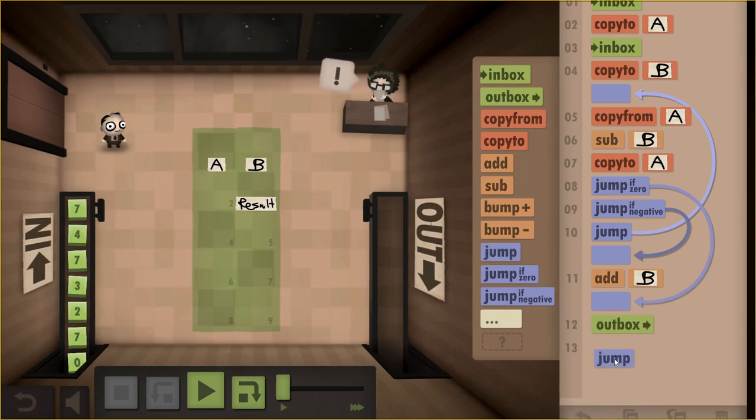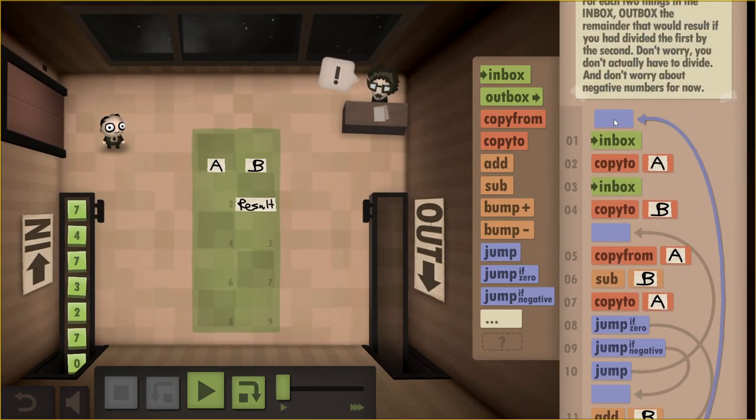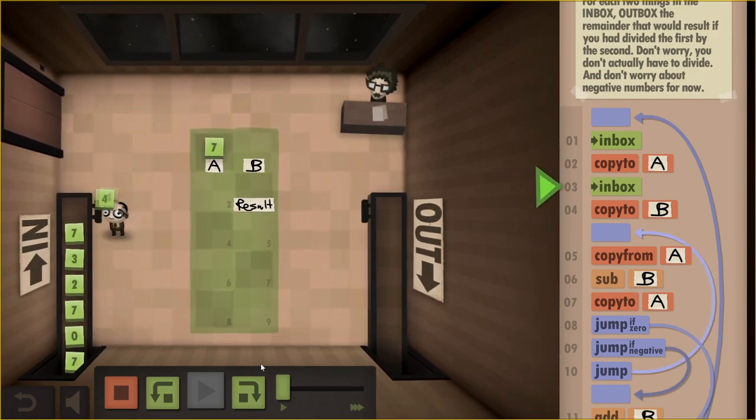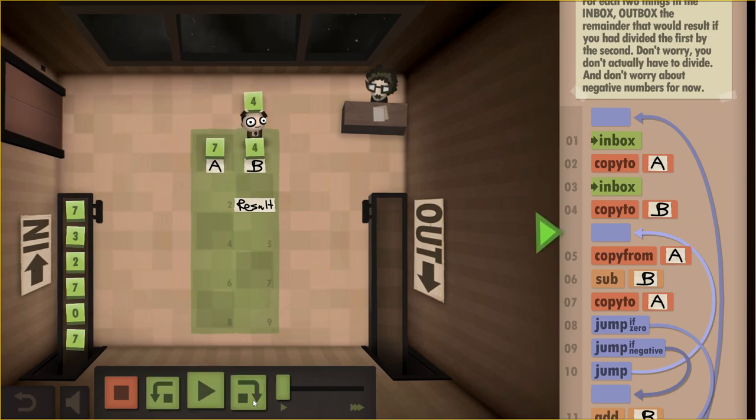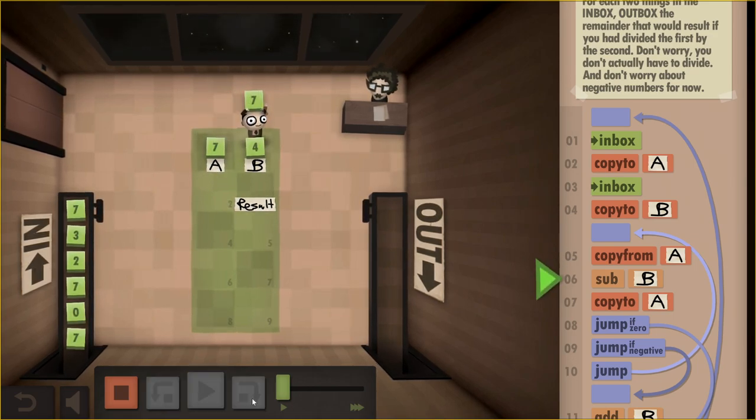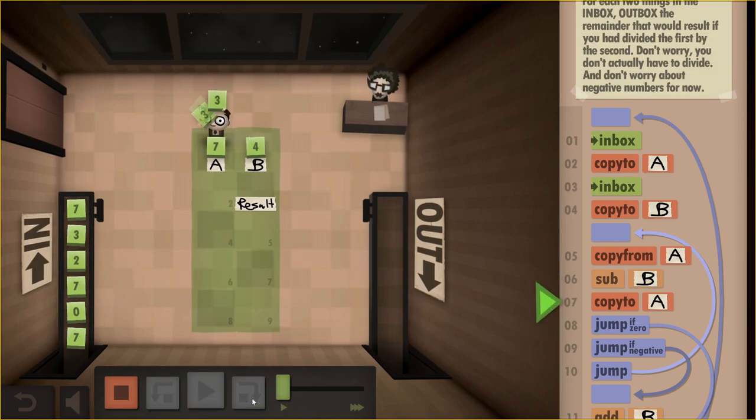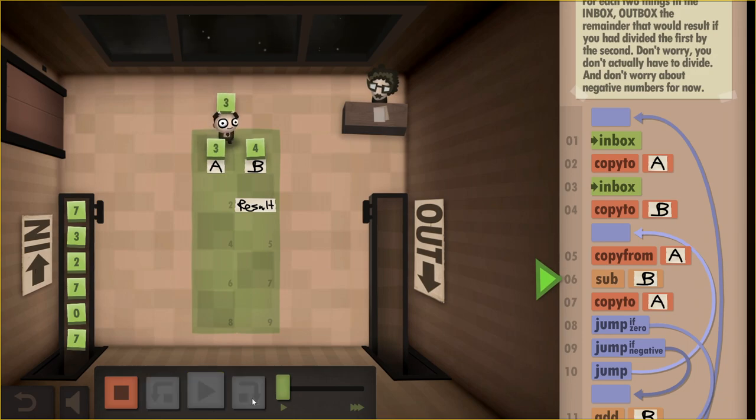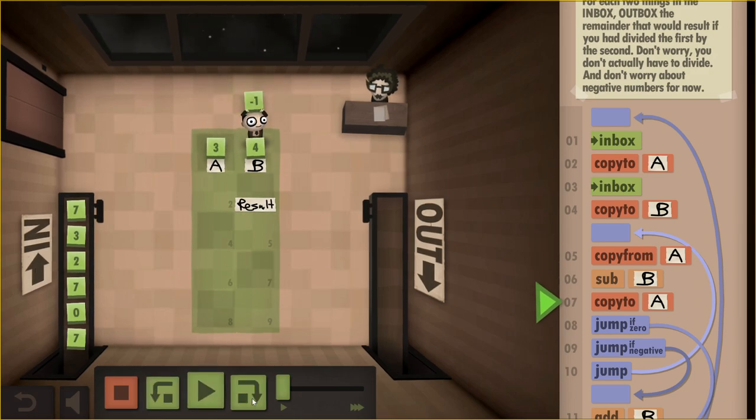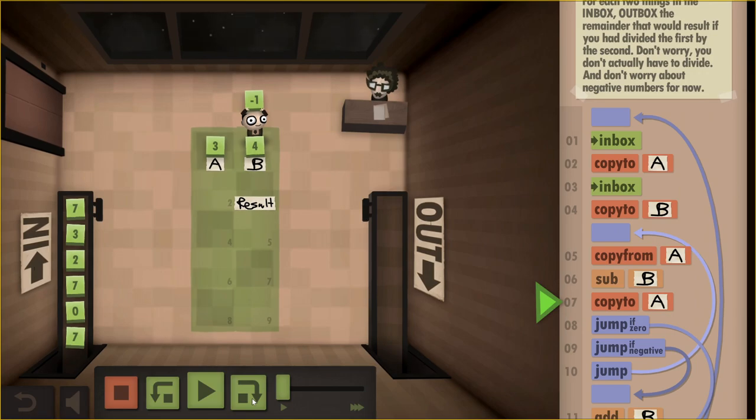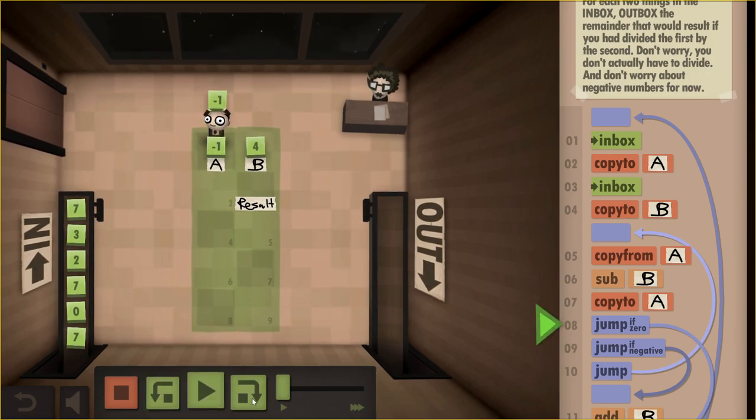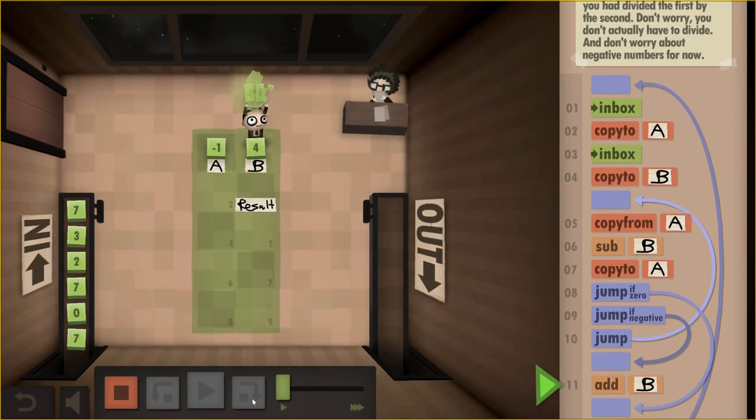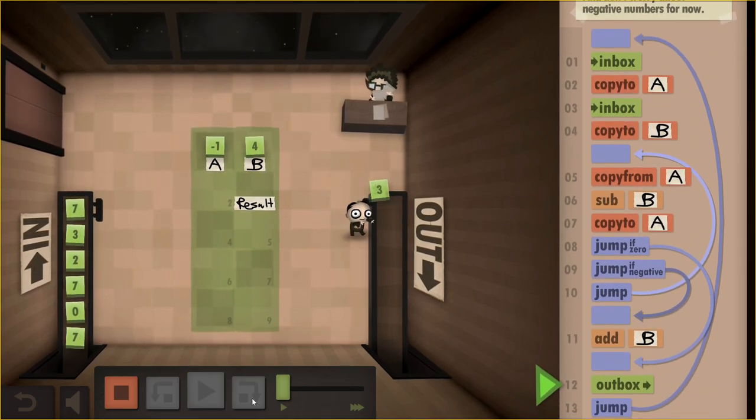Okay, so we store six, we store two. We pick up the six, we subtract the two, we get four, and we store it. The number we have is not zero and it's not negative, so we're going to do it again. Pick up two, it's not negative. Okay, we get a zero, we store it. So now it is zero, so we want to send that to the outbox. So we'll go ahead and put the outbox there.